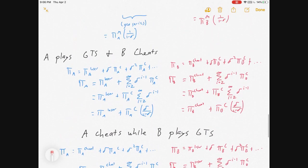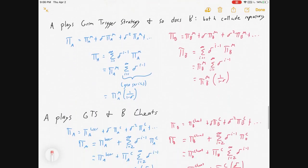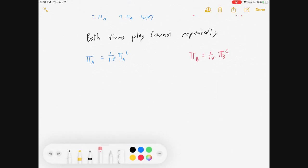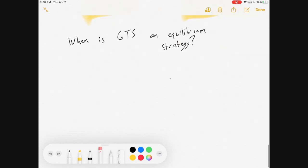Okay. So, we've gone through a lot of math. This is all kind of just preliminaries to what we wanted to get to. So hopefully you can pause and work through it if you want to. But what's coming next? When is Grim Trigger Strategy an equilibrium strategy?